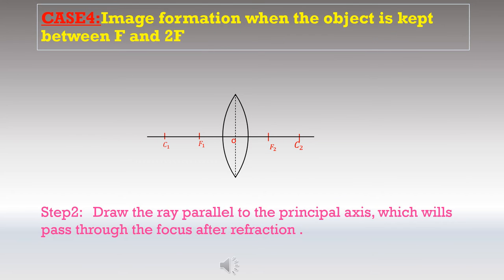Case 4: Image formation when the object is kept between F and 2F. Draw the lens, mark C1, F1, C2, and F2. Draw the object anywhere between C1 and F1. Step 2: Draw the ray parallel to the principal axis, which passes through the focus after refraction — the same as in all previous cases.